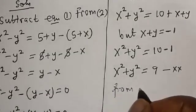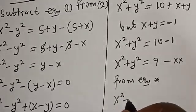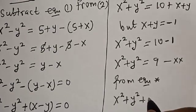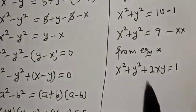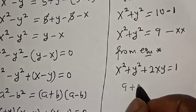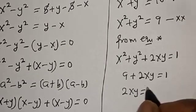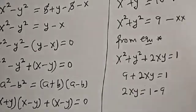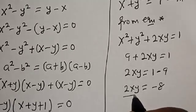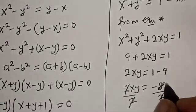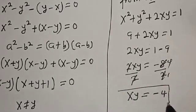From equation star, x squared plus y squared plus 2xy equals 1. But x squared plus y squared equals 9, so we have 9 plus 2xy equals 1. Then 2xy equals 1 minus 9, which gives 2xy equals minus 8. Dividing both sides by 2, we get xy equals minus 4. And this is the final answer.